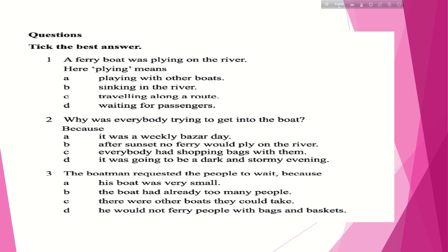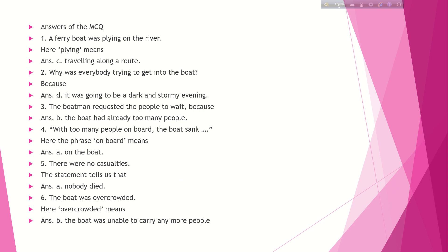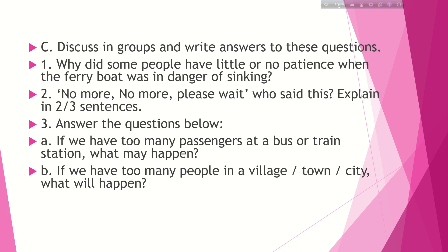Now for the MCQ answers. Number one: 'A ferry boat was plying on the river' — 'plying' means — answer C: traveling along a route. Number two: Why was everybody trying to get into the boat? — Answer D: it was going to be a dark and stormy evening. Number three: The boatman requested people to wait because — answer B: the boat already had too many people. Number four: 'With too many people on board' — 'on board' means — answer A: on the boat. Number five: 'There were no casualties' tells us — answer A: nobody died. Number six: 'The boat was overcrowded' means — answer B: the boat was unable to carry any more people.